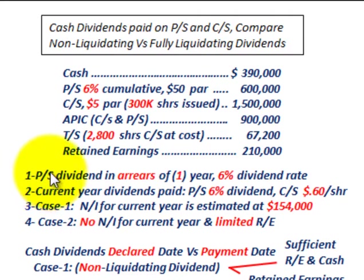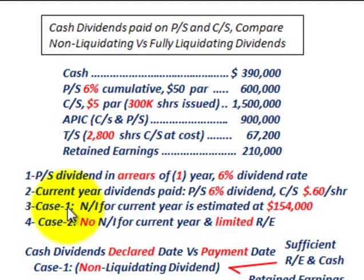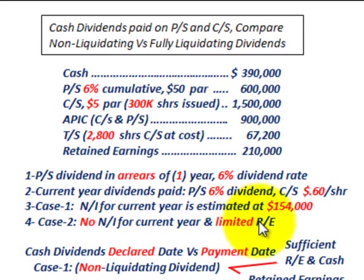For this problem, we're going to have preferred stock dividends in arrears of one year — so we're one year late in payments on the preferred stock — at that 6% dividend rate. For the current year dividends, preferred stock pays at a 6% dividend rate, and the common stock is going to pay out at $0.60 per share. We're looking at two cases: Case 1, where net income for the current year is estimated at $154,000. In Case 2, there's no net income for the current year, and we're going to have limited retained earnings — not the full $210,000.